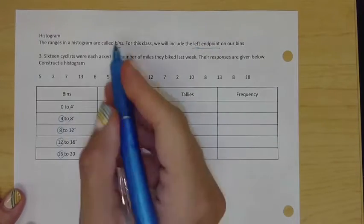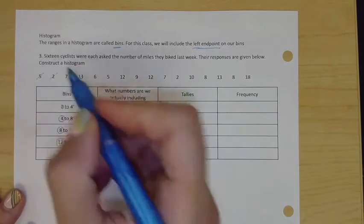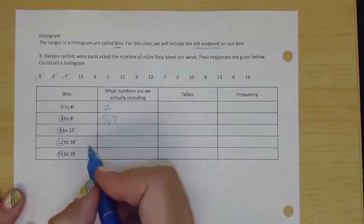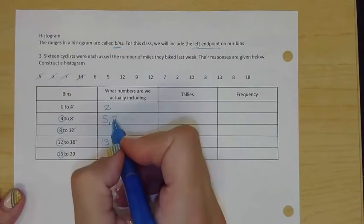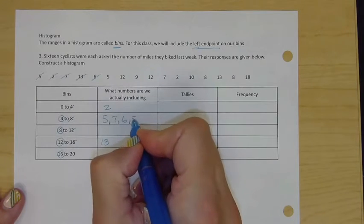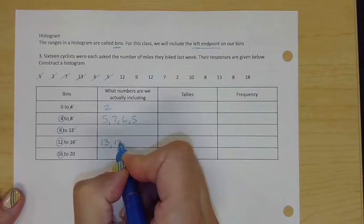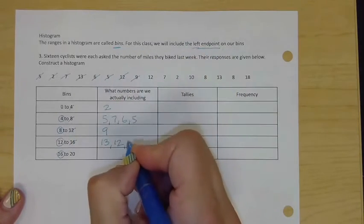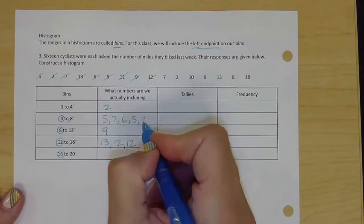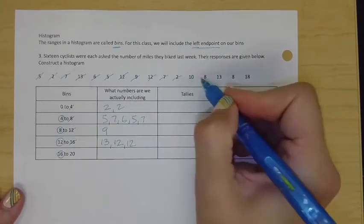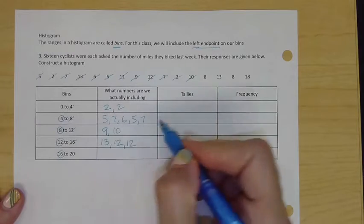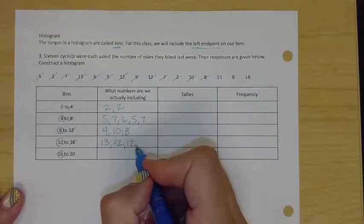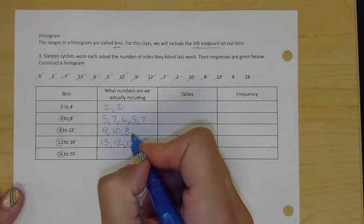What numbers are we actually including? Let me just go ahead and put a five here. Five is going to go here, seven is going to go here, thirteen is going to go here, six, five, twelve. This is where it got tricky, right? Which one does it go in? Nine, twelve, seven, two, ten, eight. Eight is going to go in this bin. Thirteen, eight goes in this bin, and eighteen.